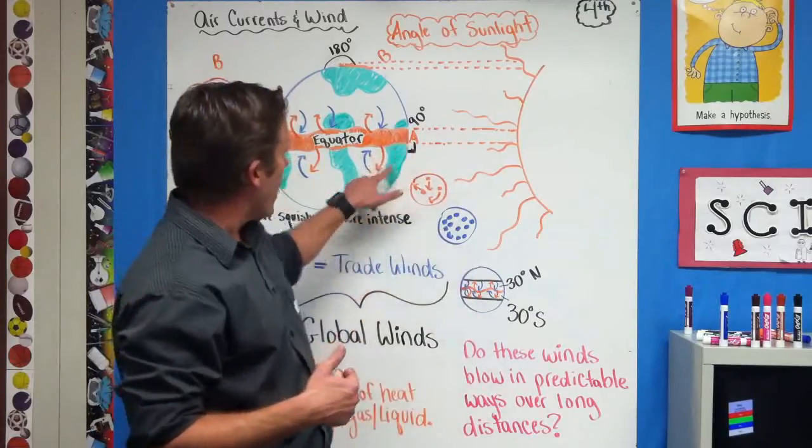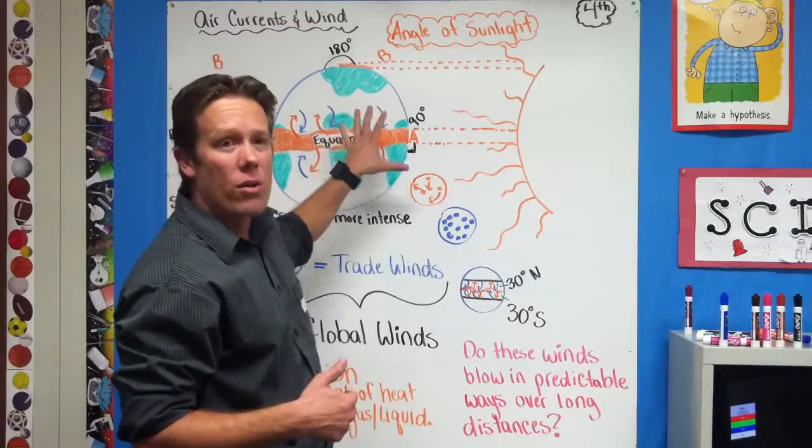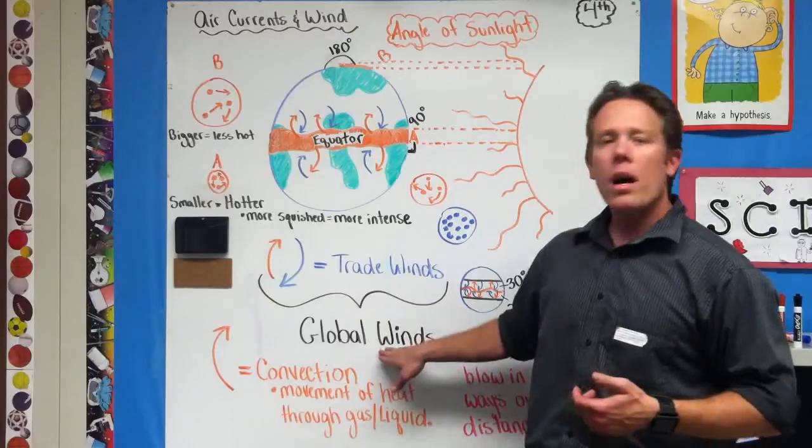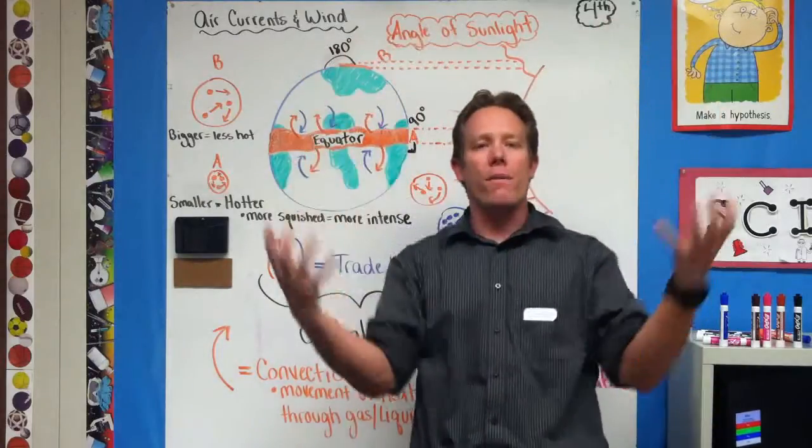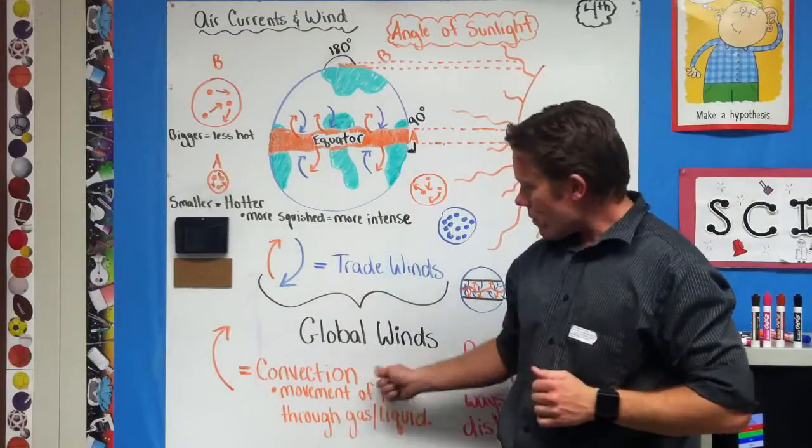The fact that these are blowing over long distances, we're talking the entire Earth here, that's why these winds, trade winds, is an example of something called global winds, winds that cover a large portion of the globe.